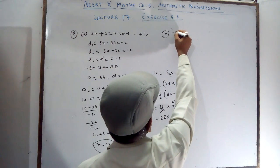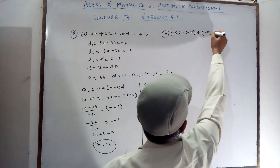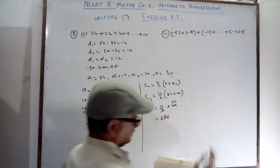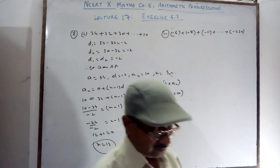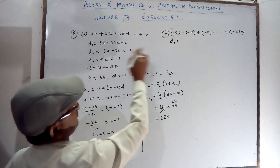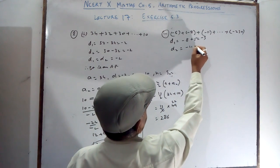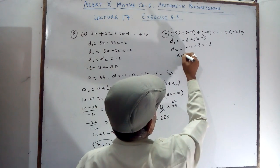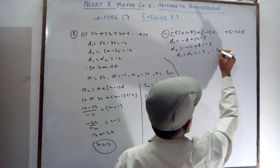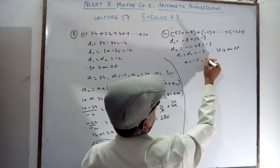The third part is given: minus 5 plus minus 8 plus minus 11 plus dot dot dot plus minus 230. Here D1 equals D2 equals minus 3, so it is an AP. A equals minus 5, D equals minus 3, and AN is given as minus 230.